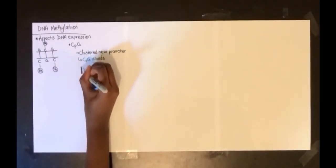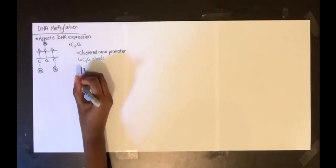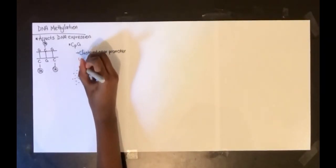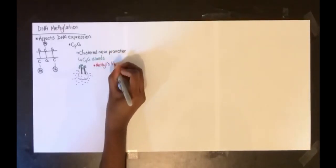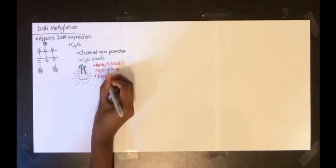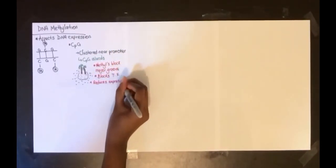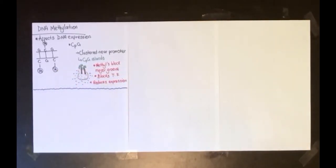What happens is that methyl groups are added to all the C's, and the methyl groups begin to stick out into the major groove when DNA is in its coiled form. This prevents the transcription factors from fitting into the groove, and that reduces expression. Usually, methylation occurs in both copies of the gene—the two alleles are methylated, and none of the alleles will be expressed.